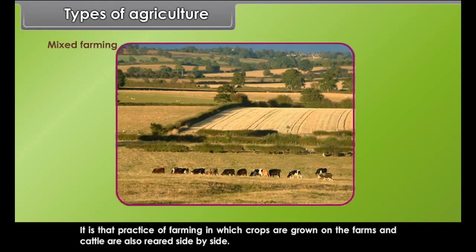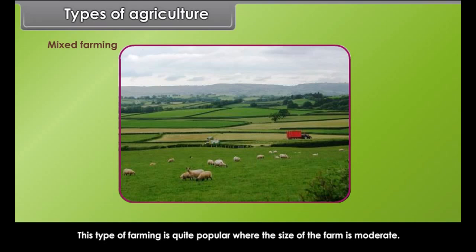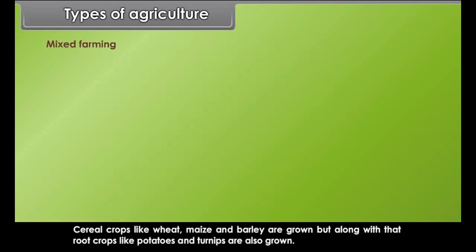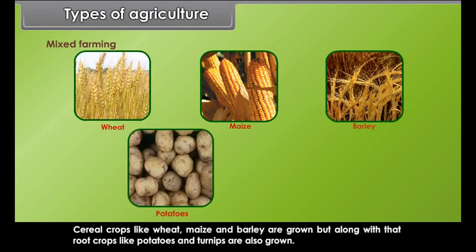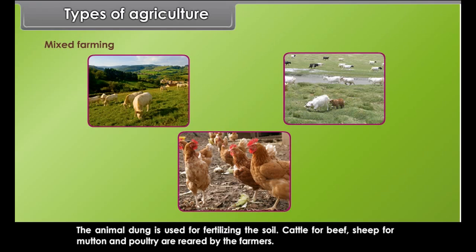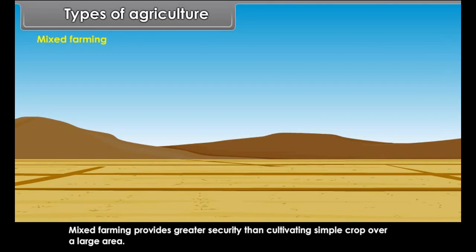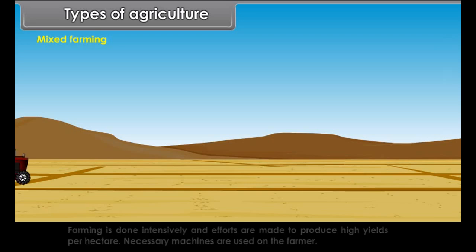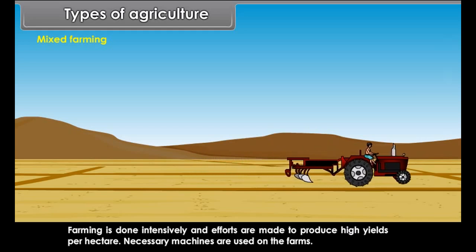Mixed farming is the practice of farming in which crops are grown on the farms and cattle are also reared side by side. It is quite popular where the size of the farm is moderate. Cereal crops like wheat, maize and barley are grown, along with root crops like potatoes and turnips. Animal dung is used for fertilizing the soil. Cattle are reared for beef, sheep for mutton, and poultry is also kept. Mixed farming provides greater security than cultivating a single crop, and efforts are made to produce high yields per hectare.